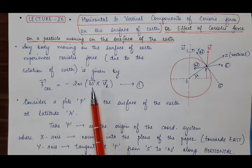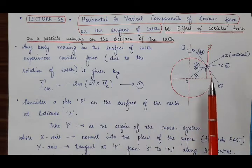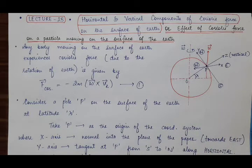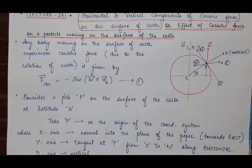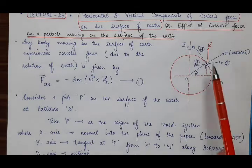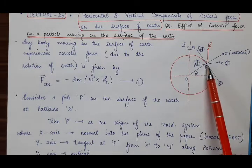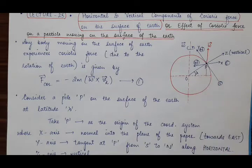If the earth is rotating with angular velocity omega, then the particle or body will also rotate with the same angular velocity omega — that we have already studied in the chapter of rigid body. Now, take the coordinate system with the position of the particle, that is point P, as the origin.